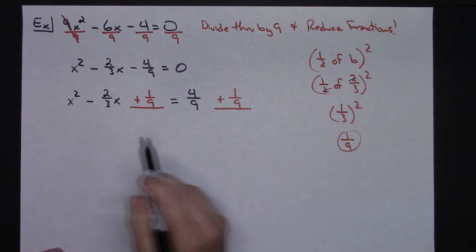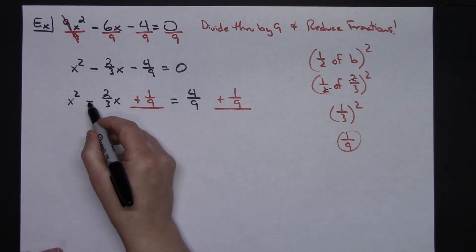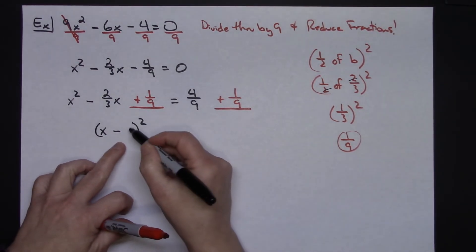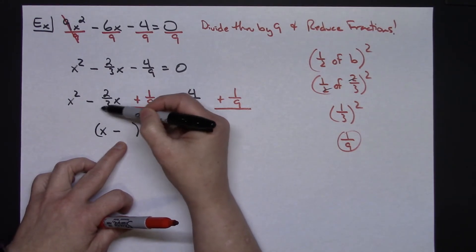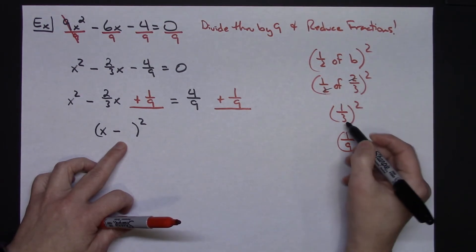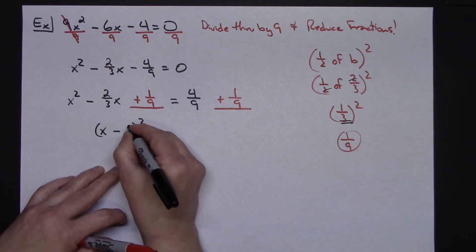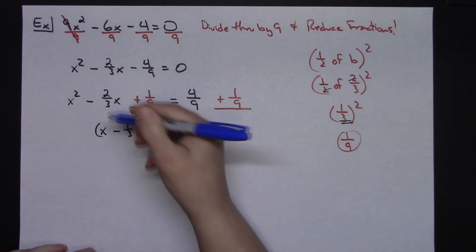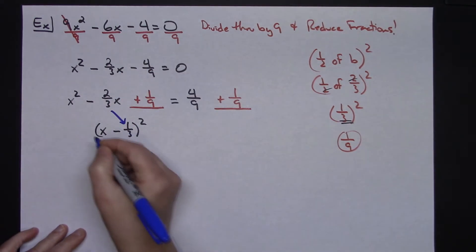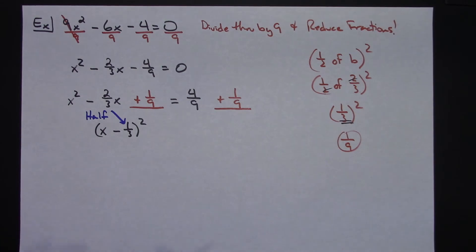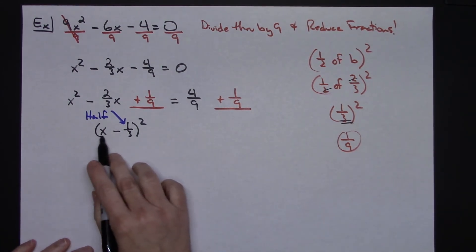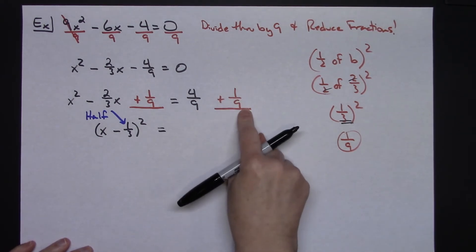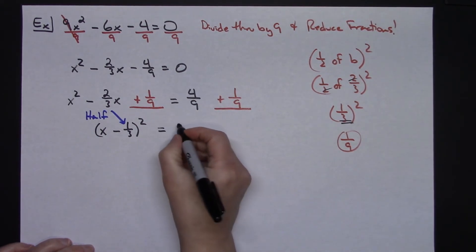It may not look easy to factor, but because of this process we're guaranteed a perfect square trinomial. The factored form is always x minus half-of-b, squared. Since half of two-thirds was one-third, this factors to x minus one-third, quantity squared. On the right side I add four-ninths and one-ninth to get five-ninths. So x minus one-third squared equals five-ninths.